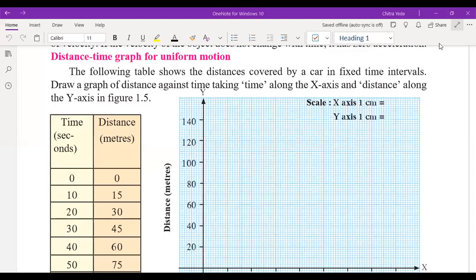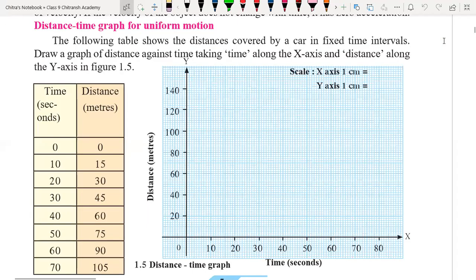Hello everyone. Now we are going to start understanding distance time graph for uniform motion for this given example. What is the question saying?